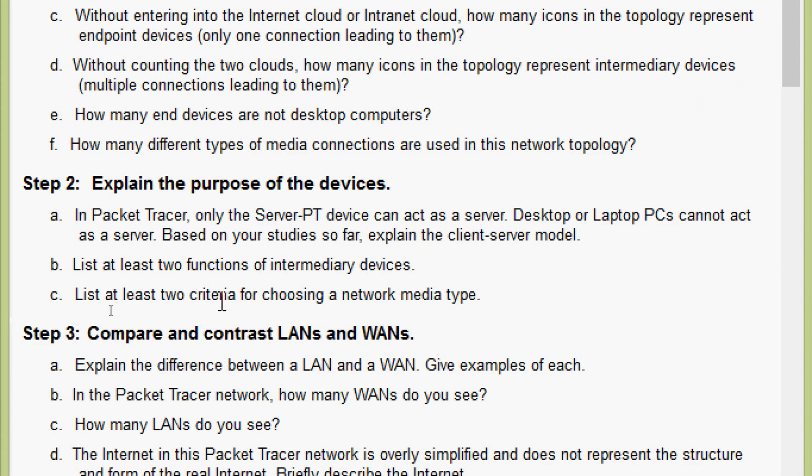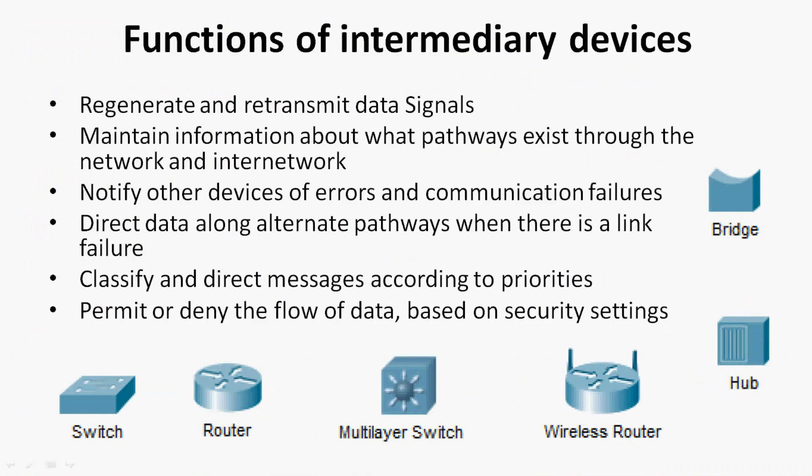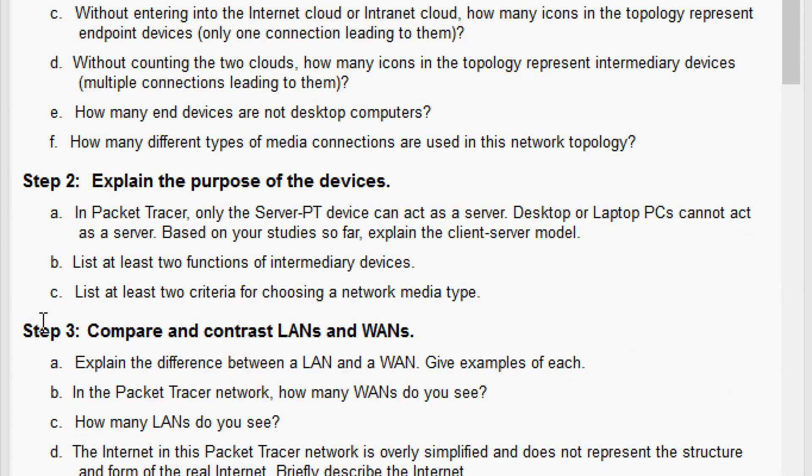Coming to part B, list at least two functions of intermediary devices. The functions include: regenerate and retransmit data signals; maintain information about what pathways exist through the network and internet; notify other devices of errors and communication failures; direct data along alternate pathways when there is a link failure; classify and direct messages according to priorities; and permit or deny the flow of data based on security settings.